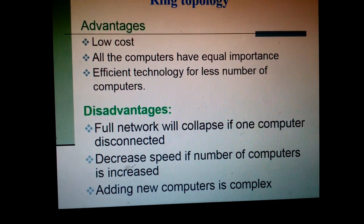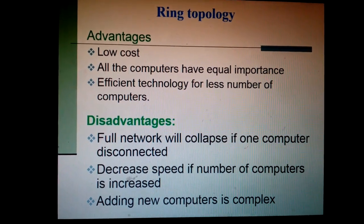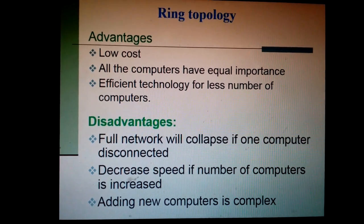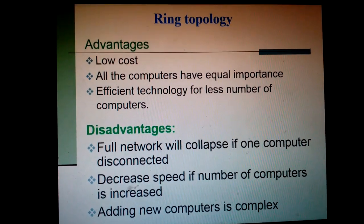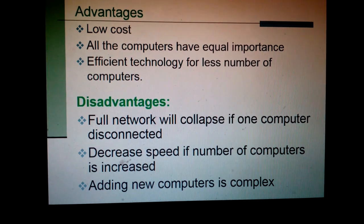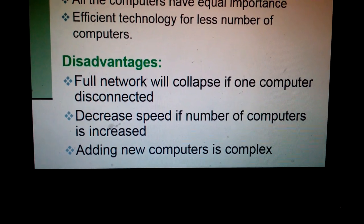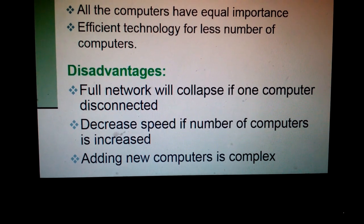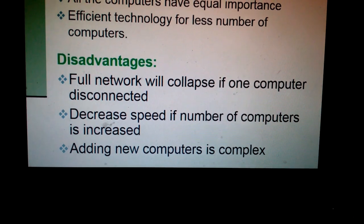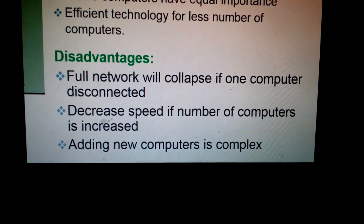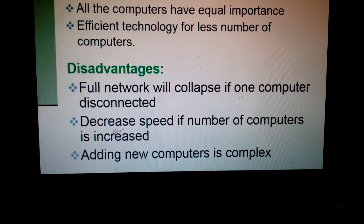Advantages of ring topology: it is low cost; all the computers have equal importance, like bus; and it is an efficient technology for a small number of computers — that means if we work with fewer computers, then ring topology is good. Disadvantages: the full network will collapse if one computer disconnects — failure of one computer affects the whole network; it also decreases speed if the number of computers is increased; and adding a new computer is very complex.